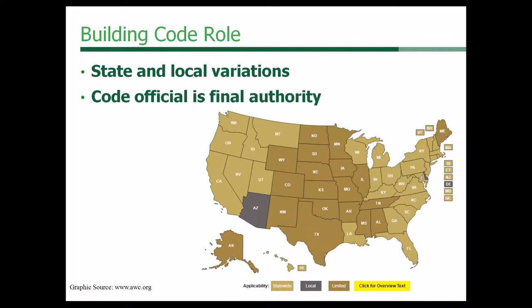Thanks, Marcy. What you're looking at now on the screen is a new webpage or map from our website. Across the country there are state and local variations with respect to the model building codes. This is especially important when talking about permanence or durability, because in a lot of cases there are local practices — some parts of the country are more arid than others, not having the same moisture problems that might exist in other parts of the country. This topic lends itself to state and local variations.